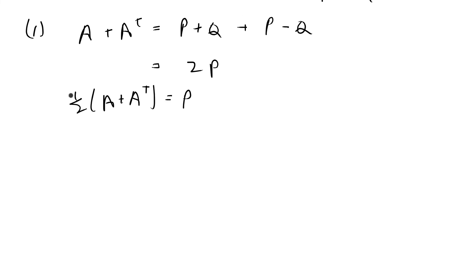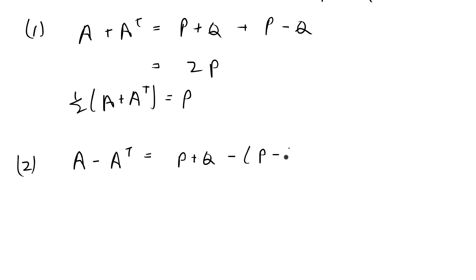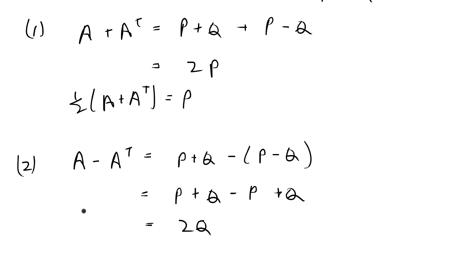To solve for Q, I'm going to take A minus A transpose. That gives P plus Q minus (P minus Q), which equals 2Q. So A minus Aᵀ equals 2Q, which means Q equals one-half times A minus A transpose.